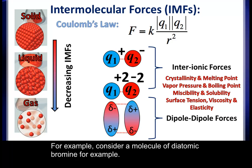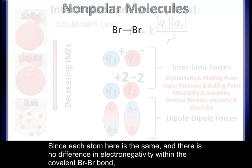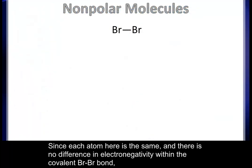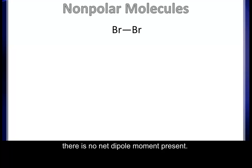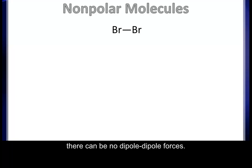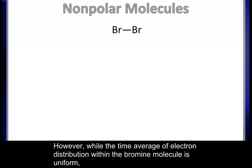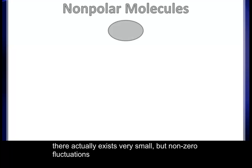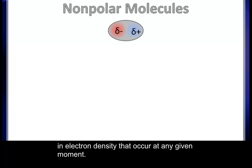For example, consider a molecule of diatomic bromine. Since each atom is the same, there is no difference in electronegativity within the covalent bromine-bromine bond, and there is no net dipole moment present. Without a dipole moment, there can be no dipole-dipole forces. However, while the time average of electron distribution within the bromine molecule is uniform, there actually exist very small but non-zero fluctuations in electron density that occur at any given moment.